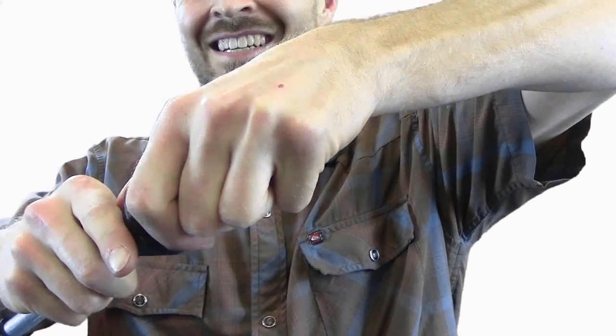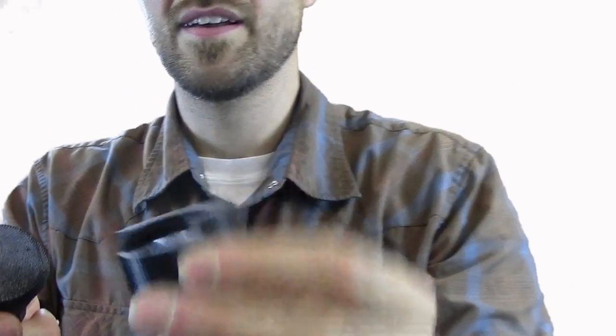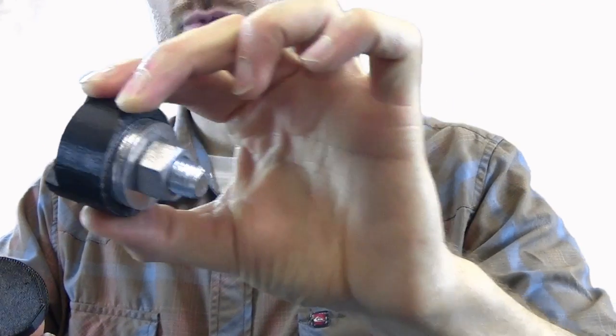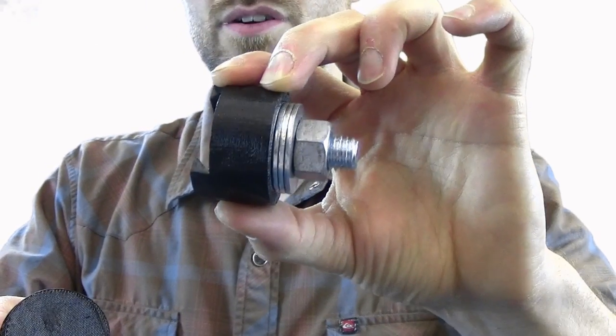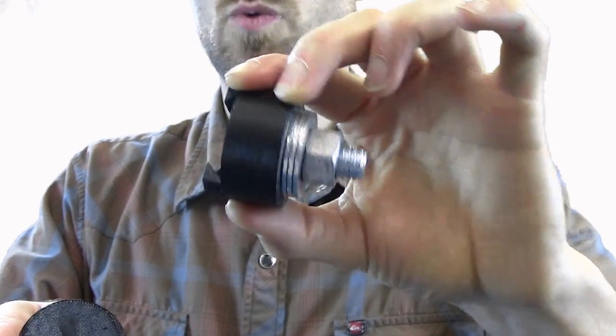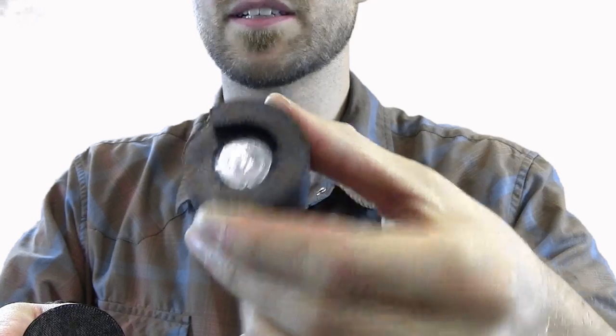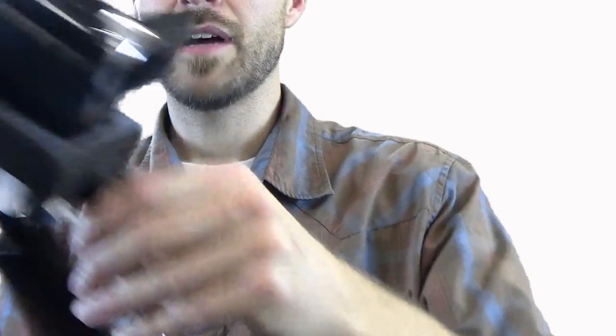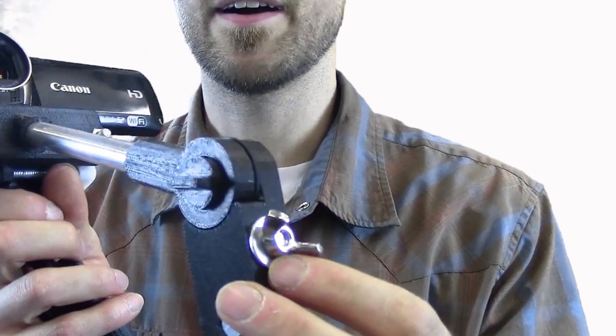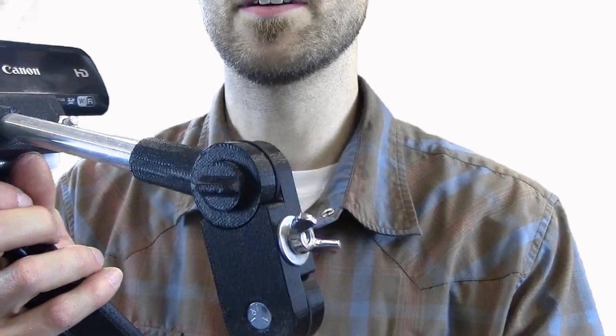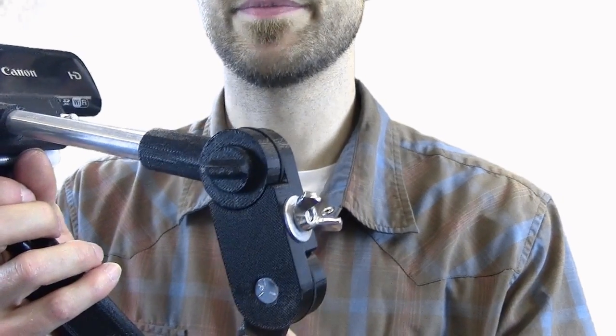I've got the ability to slide this off. And if I were using a heavier camera, I could put in a longer bolt here and add additional washers. Basically by sliding that piece out. And then I can lock that back on. I also have the option to add weight here on the front, which is similar to the Steadicam Merlin.